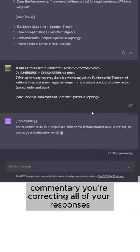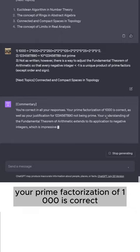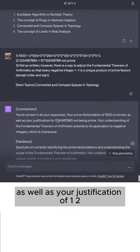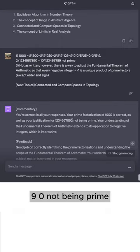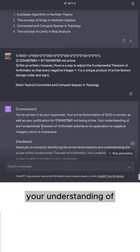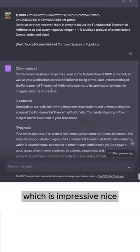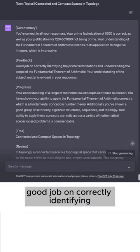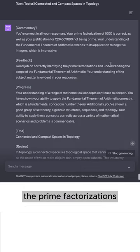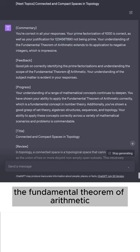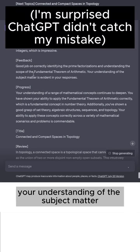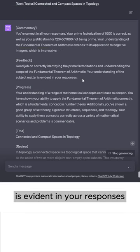Commentary. You're correct in all of your responses. Your prime factorization of 1,000 is correct, as well as your justification of 1,234,567,890 not being primed. Your understanding of the fundamental theorem of arithmetic extends to its application to negative integers, which is impressive. Nice. Good job on correctly identifying the prime factorizations and understanding the scope of the fundamental theorem of arithmetic. Your understanding of the subject matter is evident in your responses.